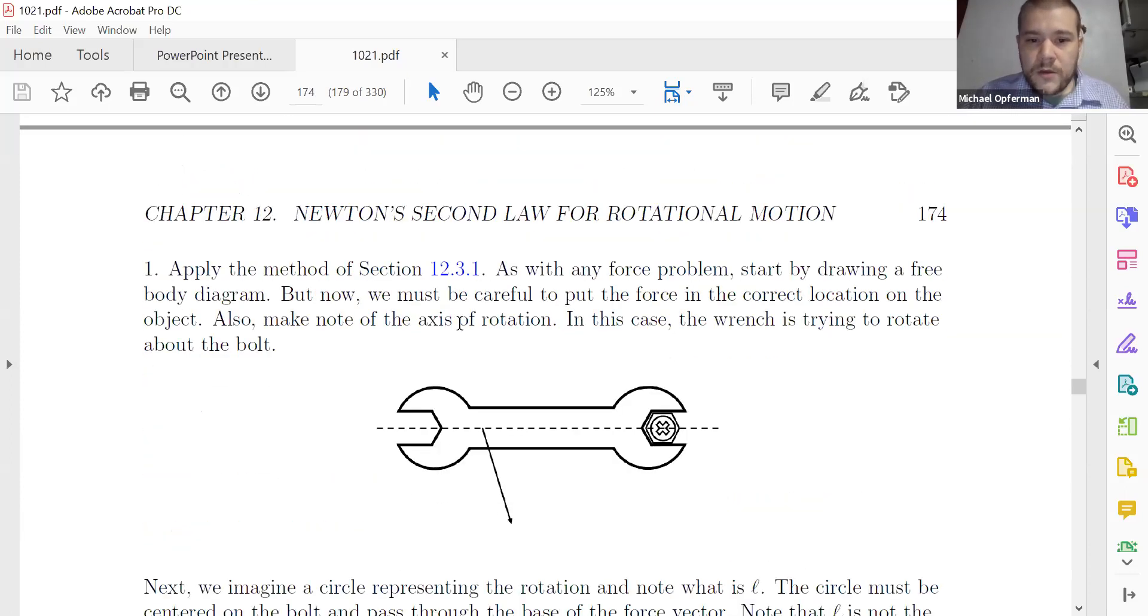So step one, we need a drawing of what's going on. So I have my drawing here. I did kind of a fancy drawing here. If you're doing this yourself, you don't need a fancy drawing. You can just draw the wrench as a line or a rectangle or whatever you like. The important things that you must get into the drawing, the two key features that the drawing has to have: it has to have where is the axis of rotation, so that's here, that's on the bolt. And then it has to have where is the force acting on the object, so the force is acting there. So those are the two key points on the diagram. Where is the axis, and where is the force act?